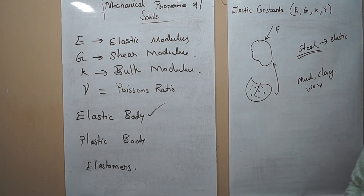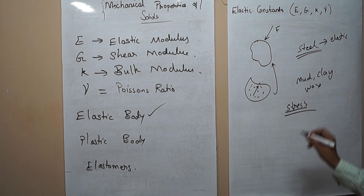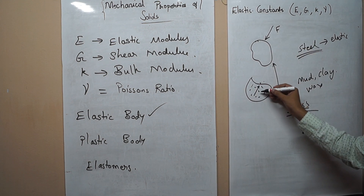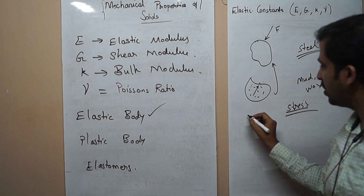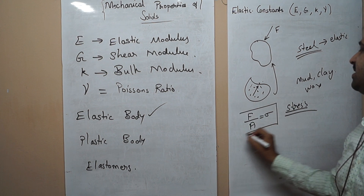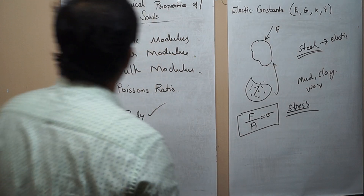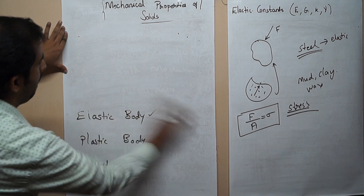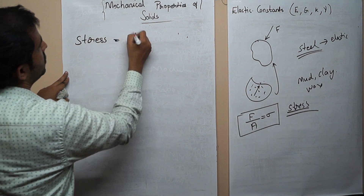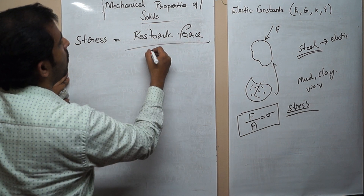Now we can see what stress is. When a force is applied to a body, the body gets deformed and a restoring force is generated inside the body. This restoring force generated per unit area is known as stress, denoted by the letter sigma. So stress equals restoring force divided by the area on which it is acting.